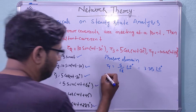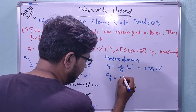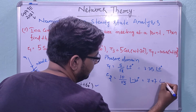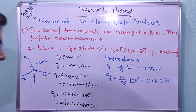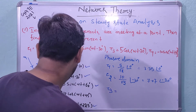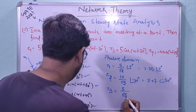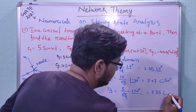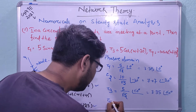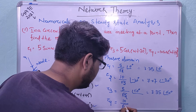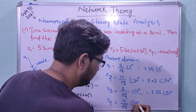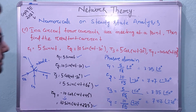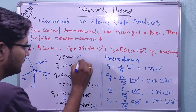i2 = 10/√2 at an angle −30°, which is 7.07 at −30°. i3 = 5/√2 at an angle 60°, which is 3.35 at 60°. i4 = 10/√2 at an angle 225°, which is 7.07 at 225°. So all four currents are now converted from time domain to phasor domain.